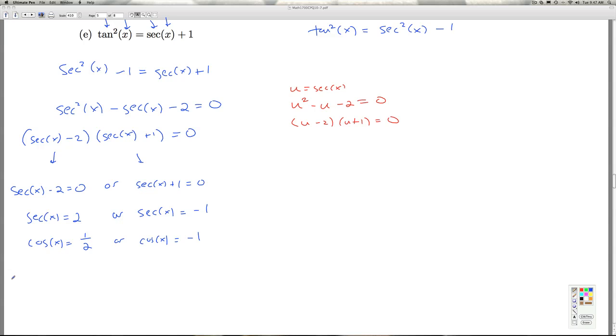So where's cosine equal to 1 half? That's at pi over 3 in quadrant 1, or any coterminal angle there. Or it could be in quadrant 4 at 5 pi over 3, plus any coterminal angle there. Where's cosine equal to negative 1? That's just at pi. Where once again, we let k run through the integers to capture all the coterminal angles.